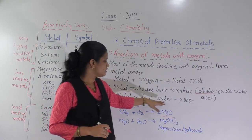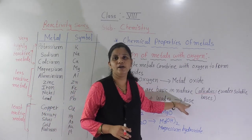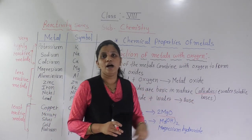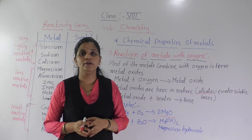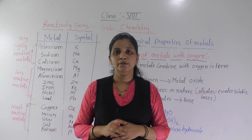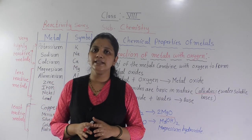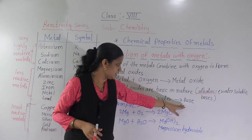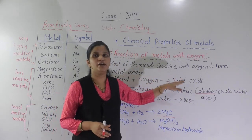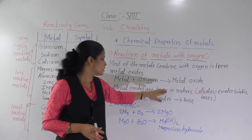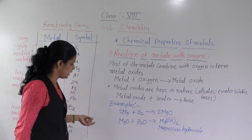Metal oxides plus water — if you add water to a metal oxide, it will form a base. And how do you test that it is basic in nature? You take a litmus paper. If red litmus paper turns blue, it means it is basic in nature. Blue litmus remains as it is — that means it is a base. So mostly when metals react with oxygen, they form metal oxides, and metal oxides plus water form a base.